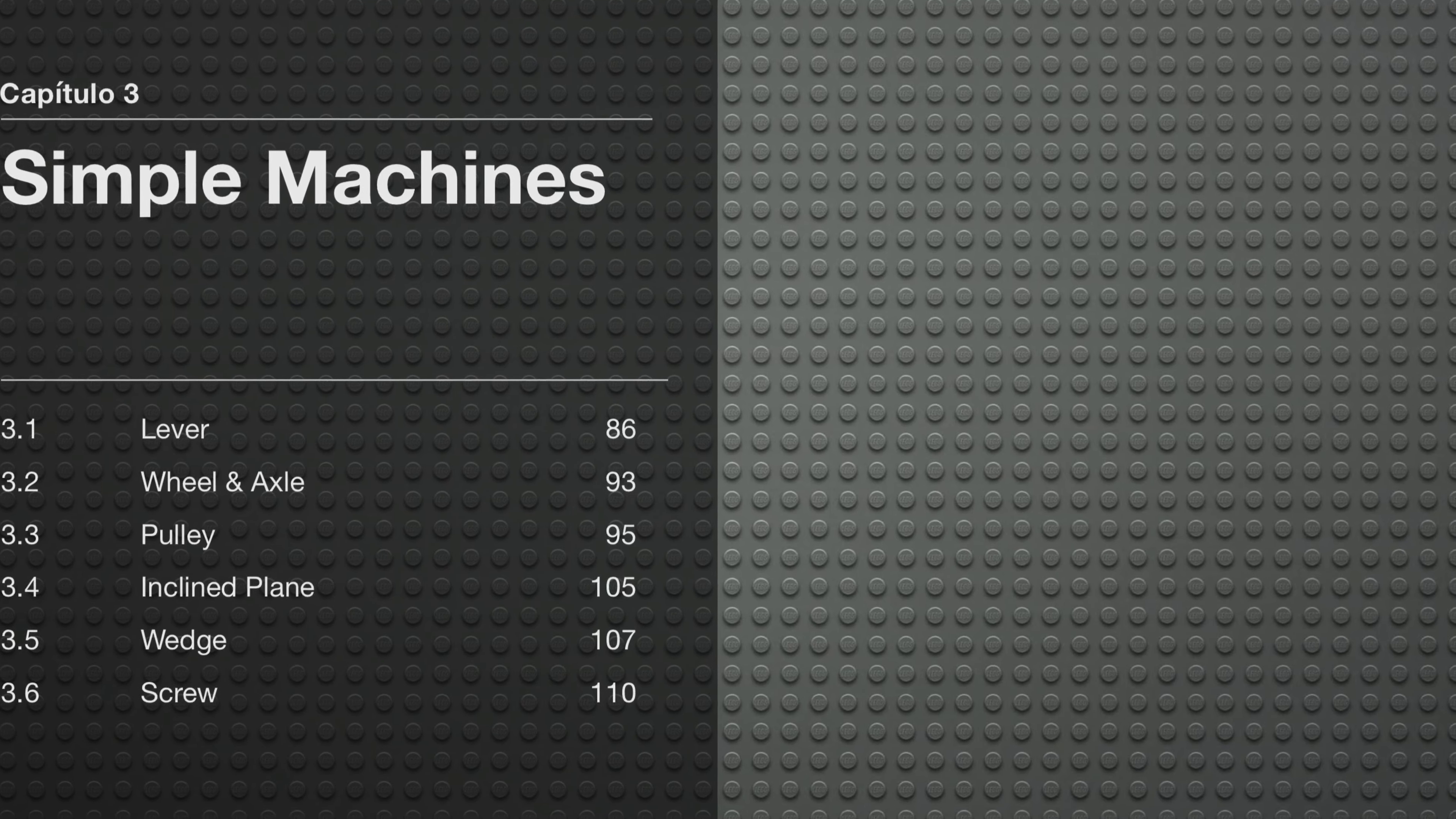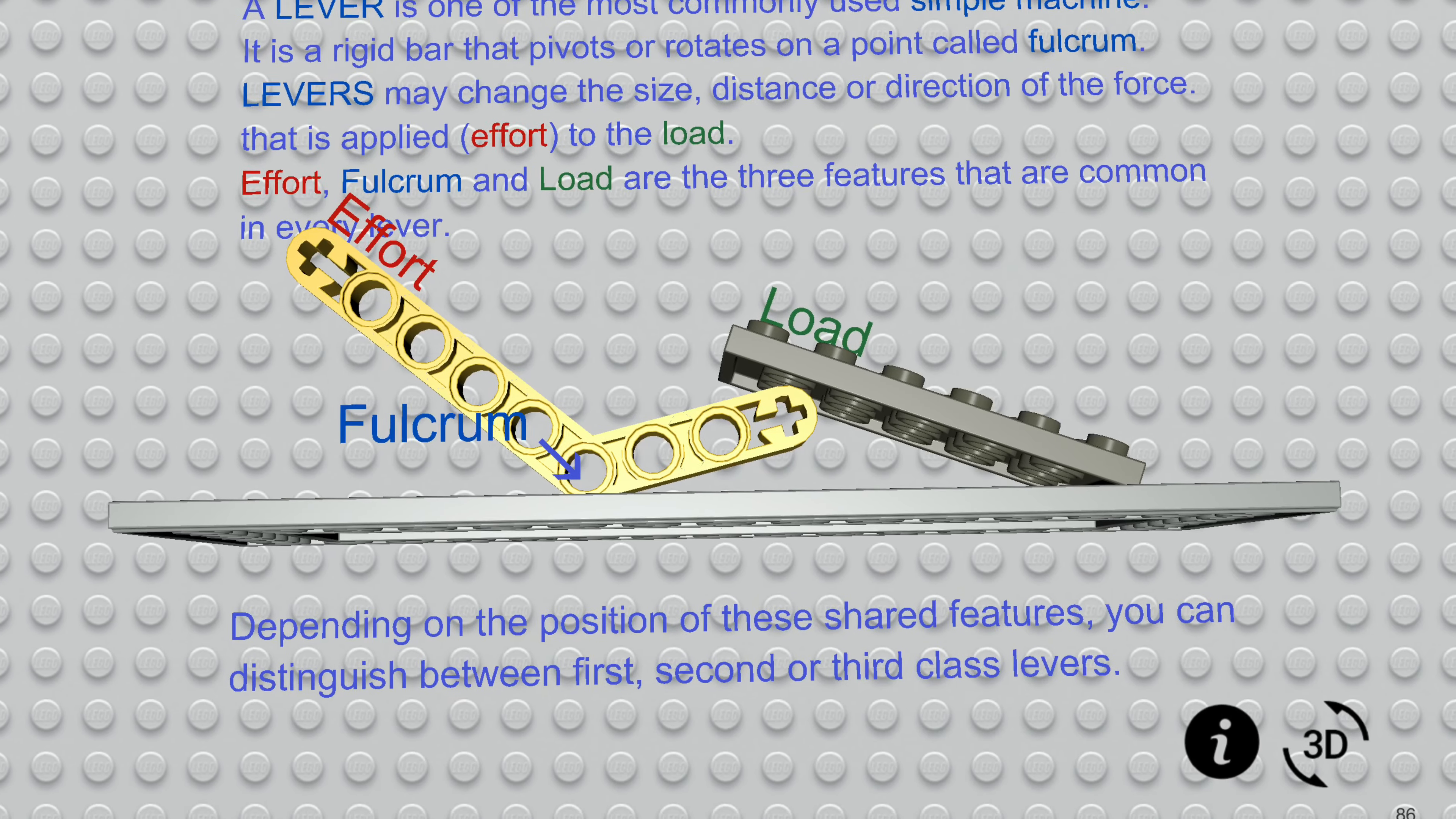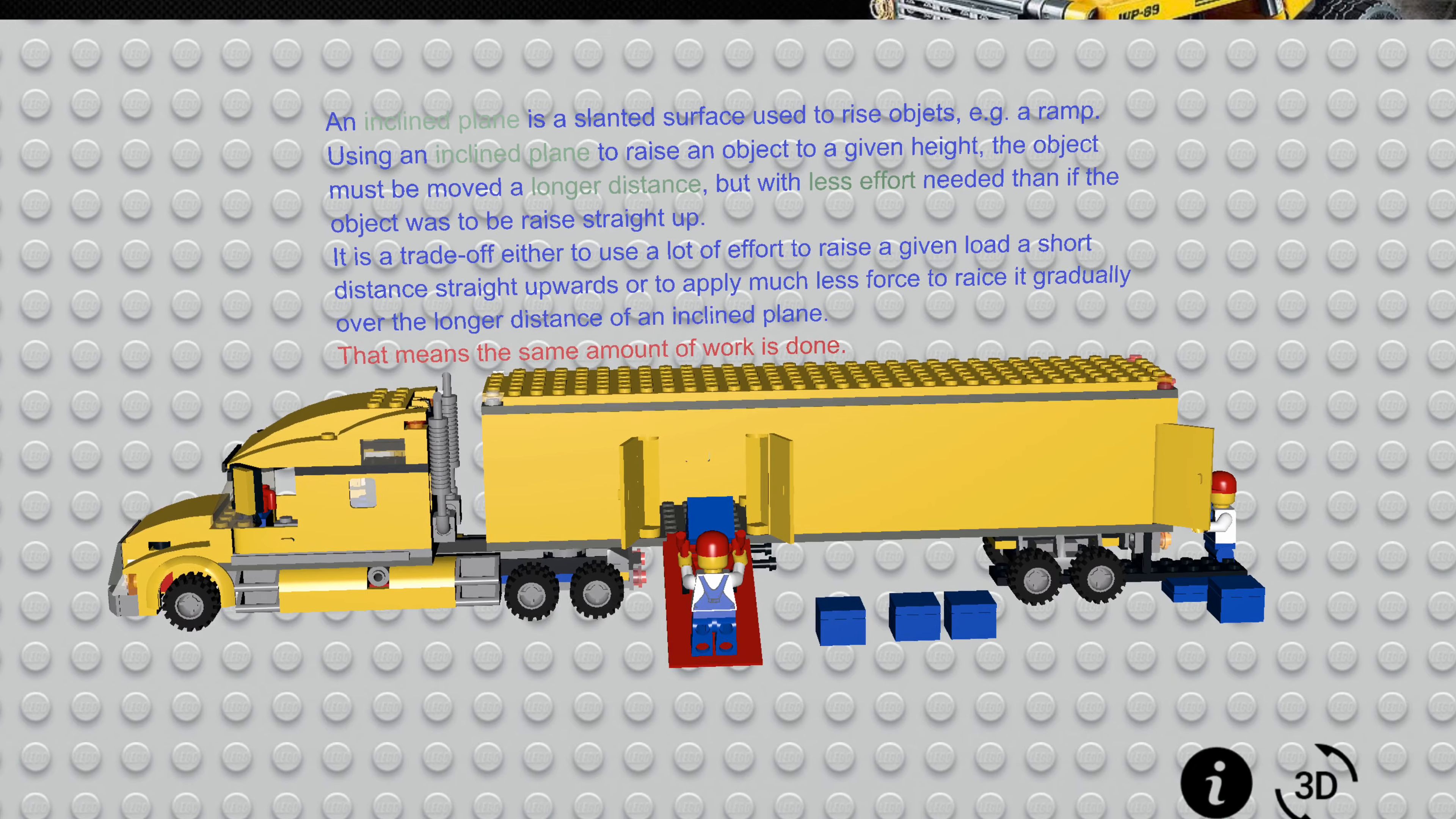Chapter 3 covers the six classic simple machines: lever, wheel and axle, pulley, inclined plane, and wedge.